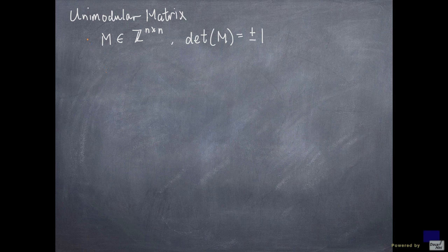First, we look at what is called a unimodular matrix. If M is a square integer matrix, then it's called unimodular if its determinant is 1 or minus 1.